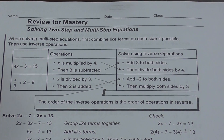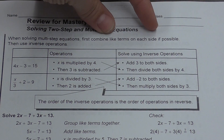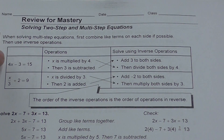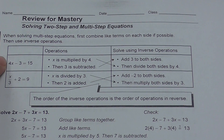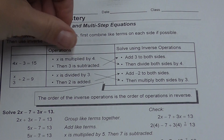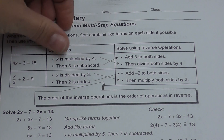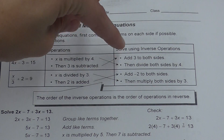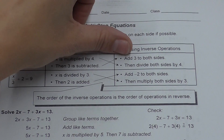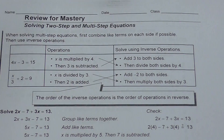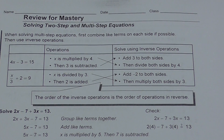The first thing you're going to do is combine like terms, if possible, on each side. Then you're going to use inverse operations. Here I have 4 times x minus 3 equals 15. The operations happening are that x is being multiplied by 4 and 3 is being subtracted from that quantity. So instead of subtraction use addition, instead of multiplication use division, but you also do them in reverse order — you're doing the inverse and reverse.